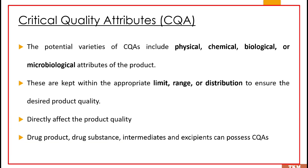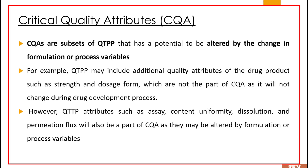The potential varieties of CQAs include the physical, chemical, biological, and microbiological attributes of the product. They are usually kept within appropriate limits or range to ensure the desired product quality, and they directly affect product quality — that is why they are critical quality attributes. There can be CQAs for drug product, drug substance, intermediates, and excipients. CQAs are subsets of QTPP and have the potential to be altered by changes in formulation or process variables.